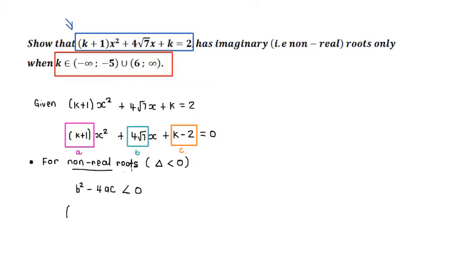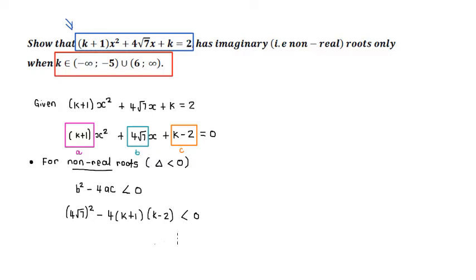When we substitute the components we identified, we have 4 root 7 as B, and that has to be squared, minus 4 times A — which is the bracket K plus 1 — times C — which is the bracket K minus 2. All of this needs to be less than zero. Now we are in a simplification step — there are two simplifications: deal with the exponent, and distribute the two brackets.